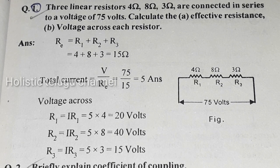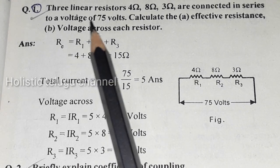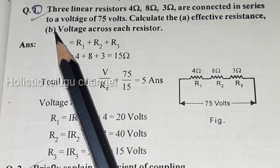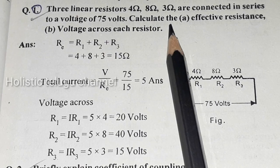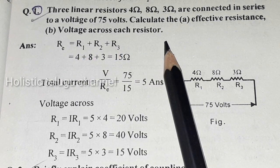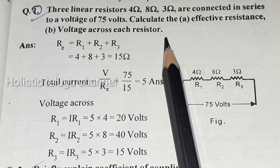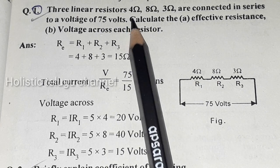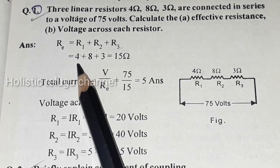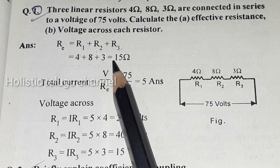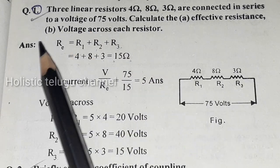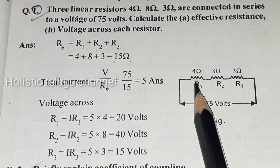First question: three linear resistors of 4 ohms, 8 ohms, and 3 ohms are connected in series to a voltage of 75 volts. Calculate the effective resistance and voltage across each resistor. Total resistance R equals R1 plus R2 plus R3, so 4 plus 8 plus 3 equals 15 ohms.